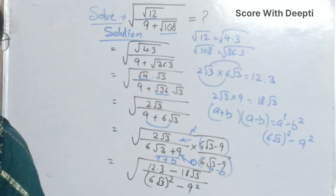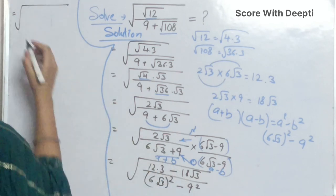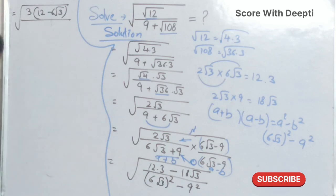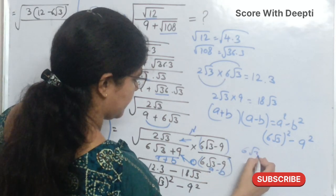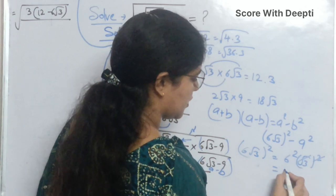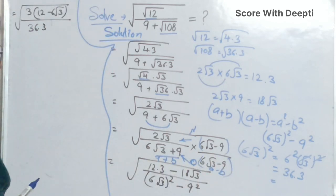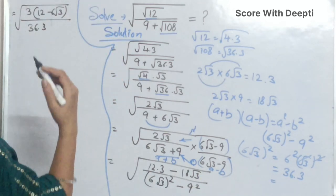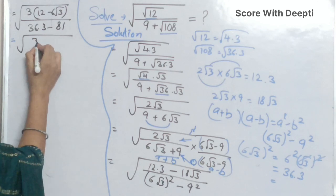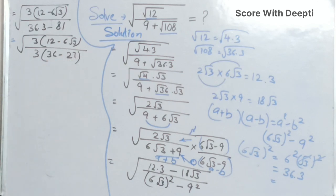In the denominator we common out 3. For 6 square root 3 whole square: the square cancels with the square root giving 36 into 3. We keep 36 into 3 as is because we are factoring out 3. In place of 9 square we write 81. So we common out 3 from the denominator and get 3 times the quantity 36 minus 27. Then 3 cancels and we get 12 minus 6 square root 3 over 9.